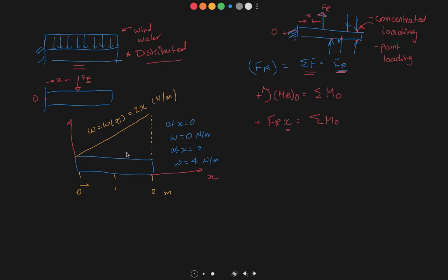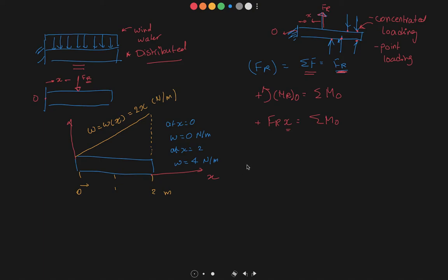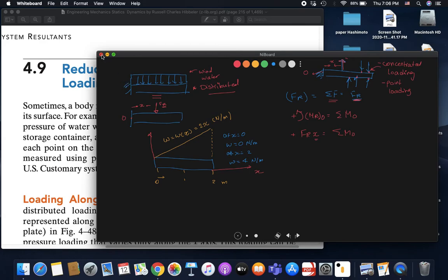We need to know how to find the resultant force — the resultant of all these infinite forces acting over the surface of the beam. We cannot add them one by one, but the idea is exactly the same. We have to sum them up by integration. By integration we can find our resultant force.